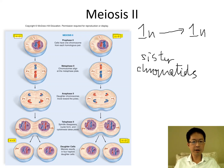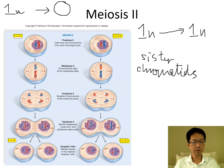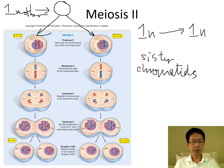At the beginning of meiosis 2 we have one mother cell. That one mother cell will go through meiosis 1 to become 2 daughter cells, and then each daughter cell will become 2 daughter cells. So in total we have 4 daughter cells.